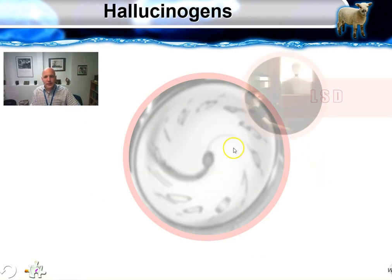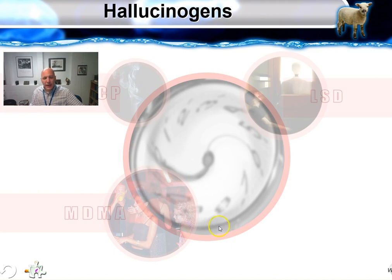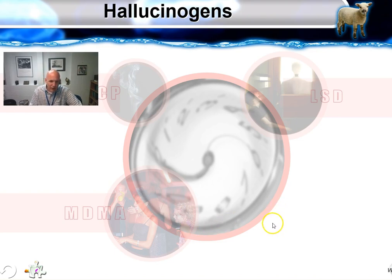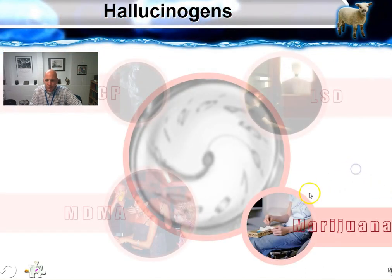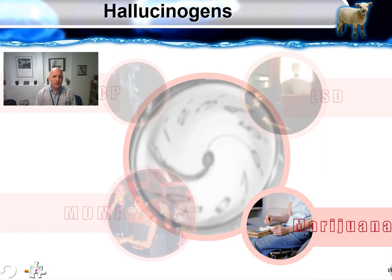Finally, hallucinogens such as LSD — also known as acid — PCP, and MDMA, the rave drug. Molly is basically a version of MDMA. Marijuana is placed in this category for lack of a better place; some people may have hallucinogenic effects with marijuana. Very dangerous things are also happening with synthetic marijuana such as spice, and there are many deaths associated with it as well.